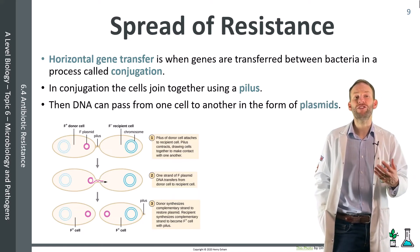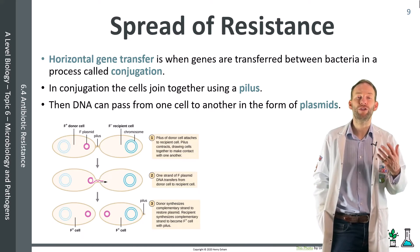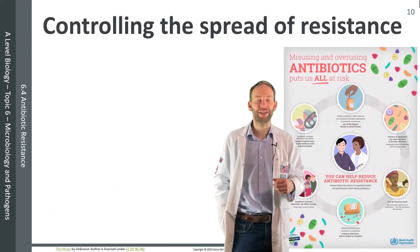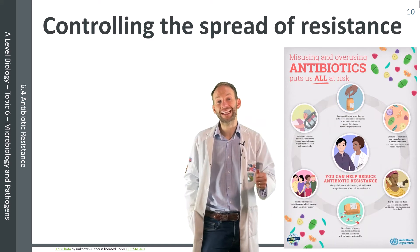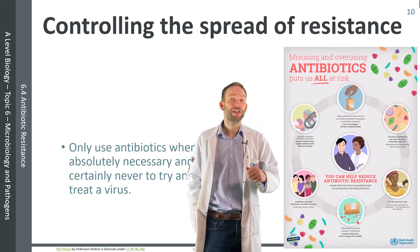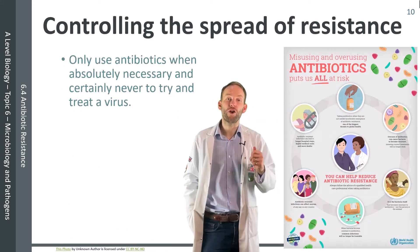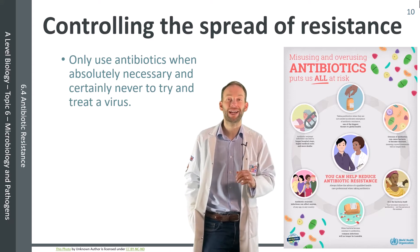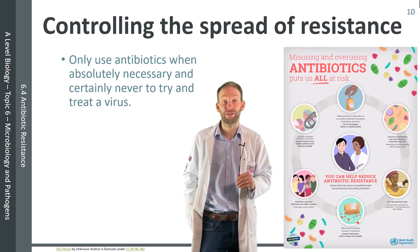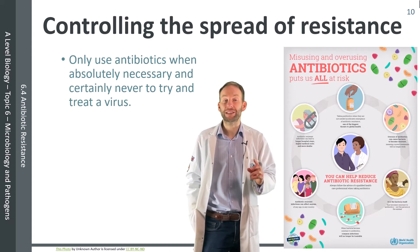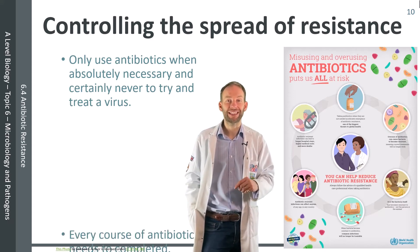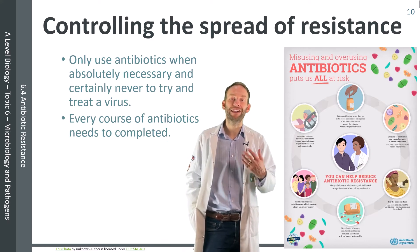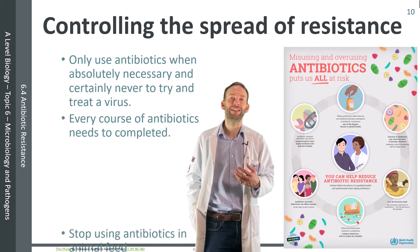There are various methods to help control the spread of antibiotic resistance. To reduce selection pressure, use antibiotics only when absolutely necessary and never to treat a virus. Every course of antibiotics needs to be completed, and the amount of antibiotics used in animal feed should be reduced.